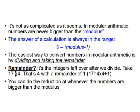If n is a negative number, then instead of subtracting multiples of m, we add as many multiples of m as needed until we have an answer between 0 and m minus 1, where m is the modulus.